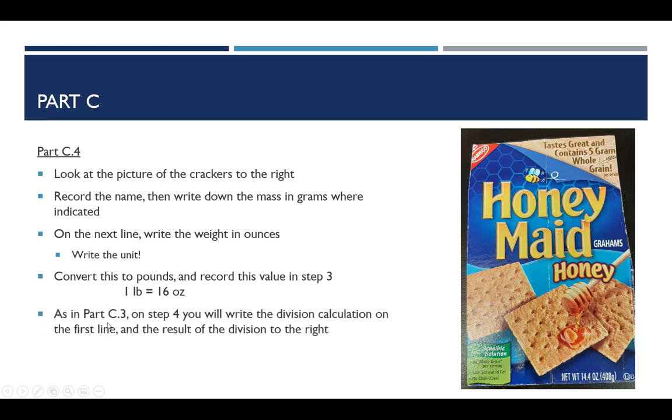And then, as you saw in part C3, step 4 asks you to write the division calculation on the first line and then the result to the right. So, in other words, this division calculation would go where that yellow box was, and then the red box is the result of that division. And then the rest is very similar to part C2 and C3. If you have any difficulties doing this conversion right here, then what I would recommend that you do is watch the next part of this video, which talks about how to make the conversions, and then go back and carry out the conversion as needed.